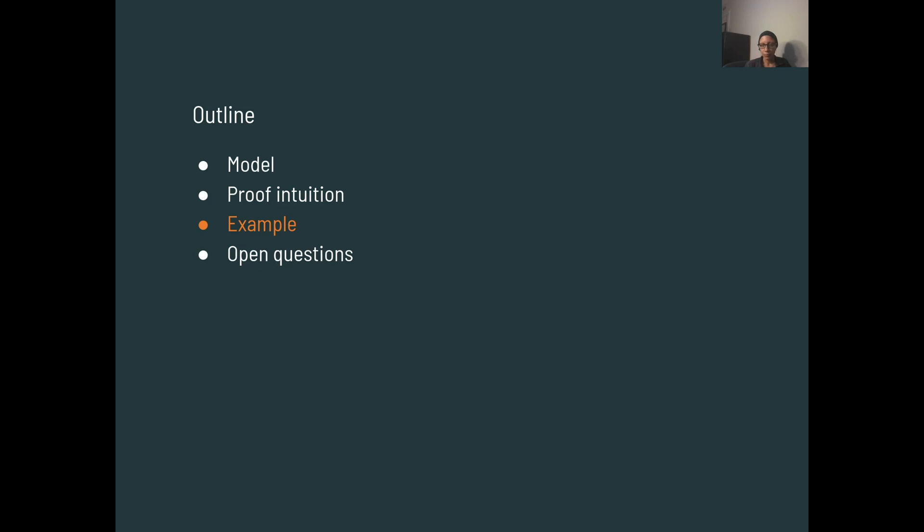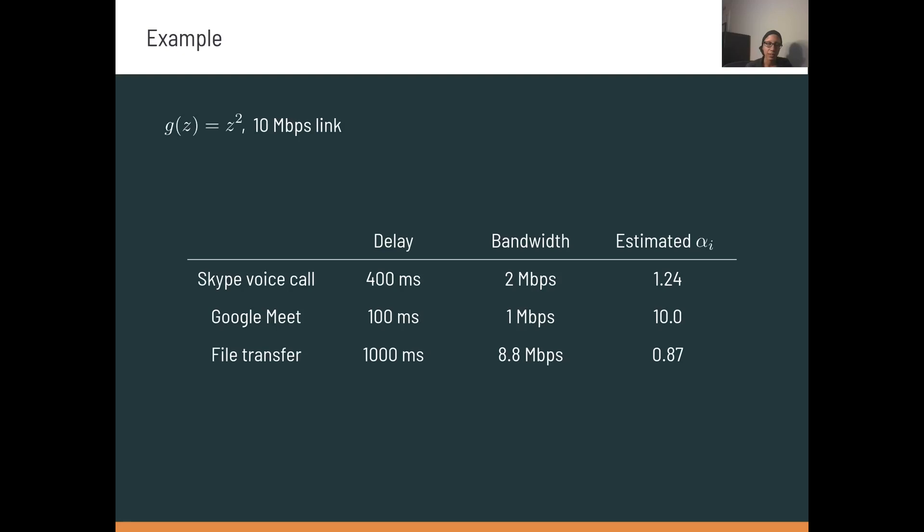I'll now discuss a simple example to show how this framework could potentially be used to reason about some real world applications. In this example, we set up three applications using a 10 megabit per second link. Here, two of the applications, Skype and Google Meet, are relatively more latency sensitive, while we model the file transfer as being relatively insensitive but requiring higher bandwidth. We use a latency penalty that's quadratic in the delay. We looked at the minimum delay and bandwidth requirements for these three applications, and we derived alpha values that could correspond to each of these applications. Details on that derivation are in our paper.